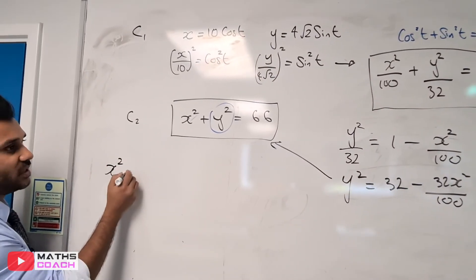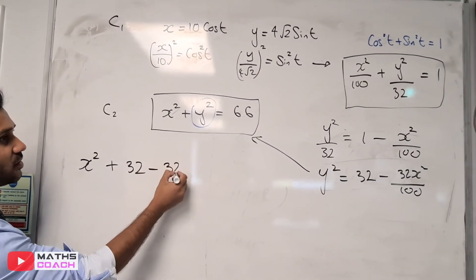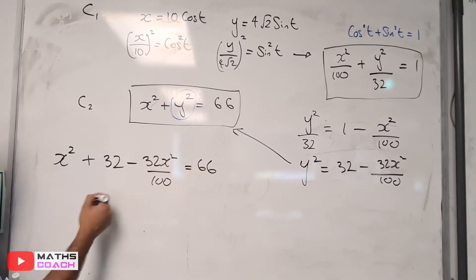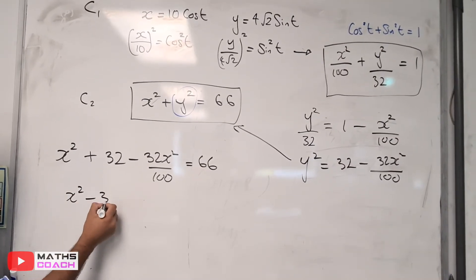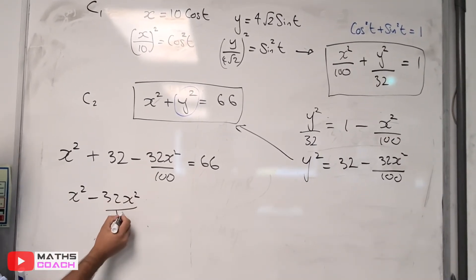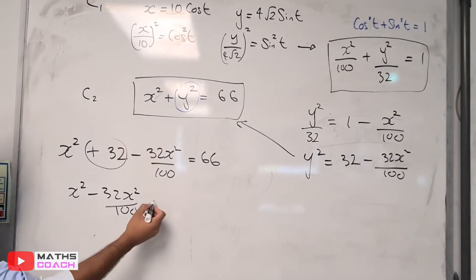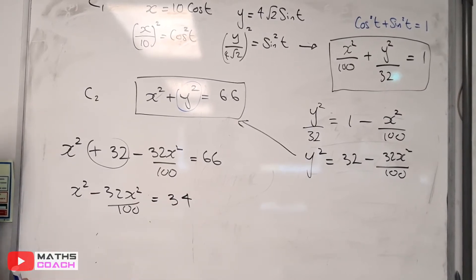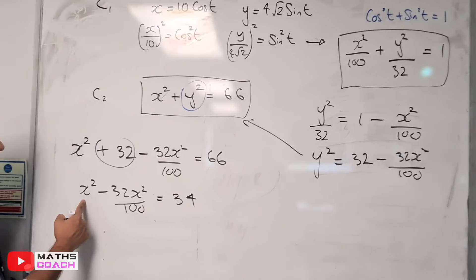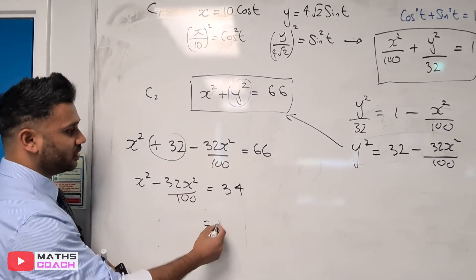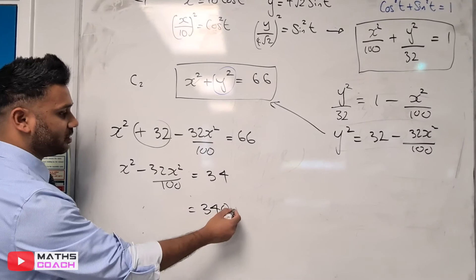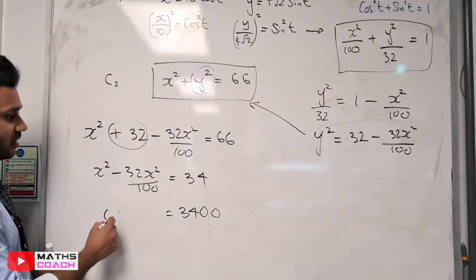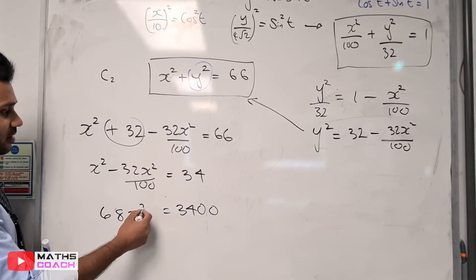We have x² + (32 - 32x²/100) = 66. That's x² - 32x²/100 = 34. Multiplying everything by 100: 100x² - 32x² = 3400. So 68x² = 3400.